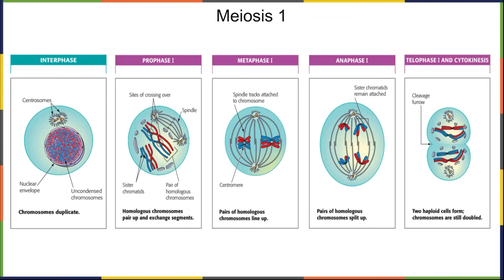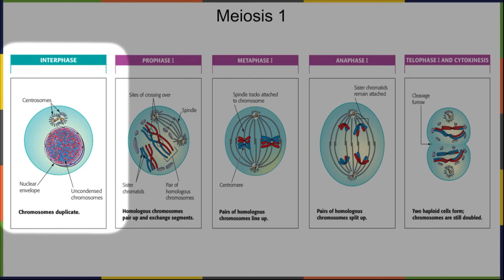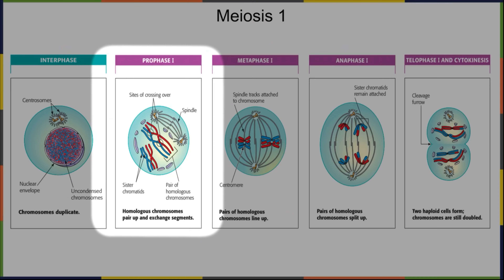Meiosis one begins with the cell in interphase. In interphase, the cell has uncondensed chromosomes, still has a nuclear envelope, the centrosomes have duplicated, and the chromosomes have duplicated but haven't condensed yet. In prophase one, the chromosomes and chromatin condense. Since they're duplicated, those chromosomes make the familiar X shape connected at the centromere, and the centrosomes begin to move to either side of the cell as spindle fibers start to form.